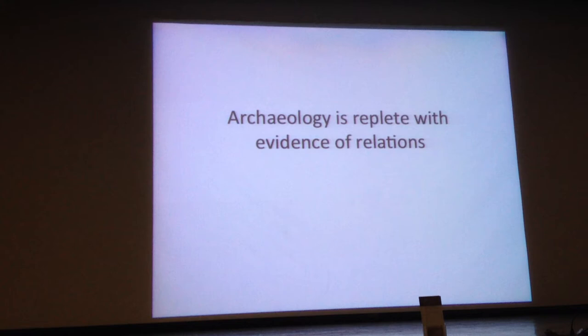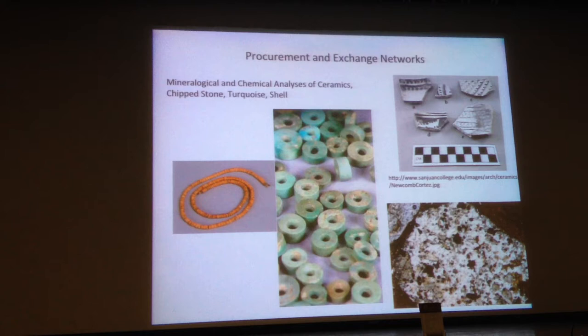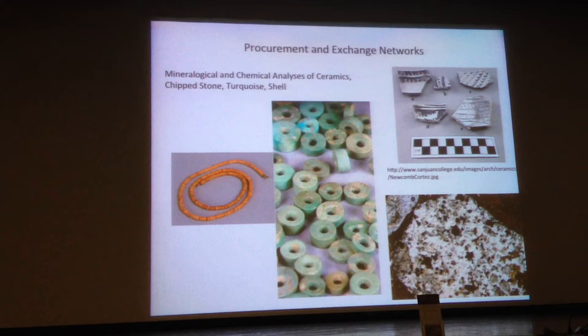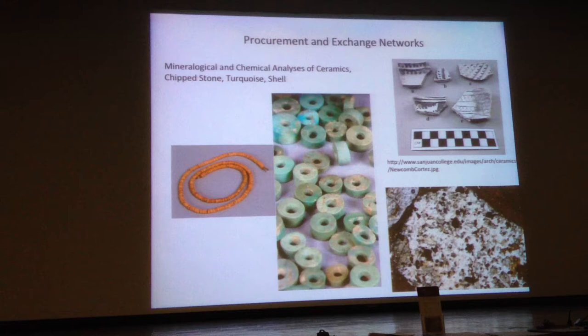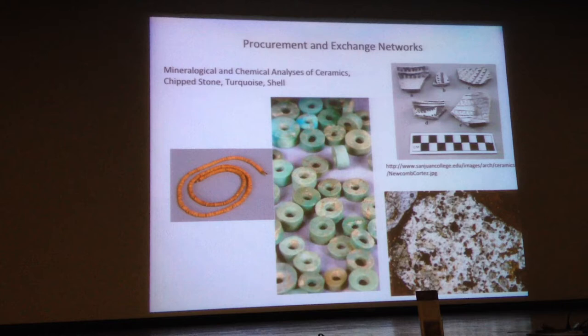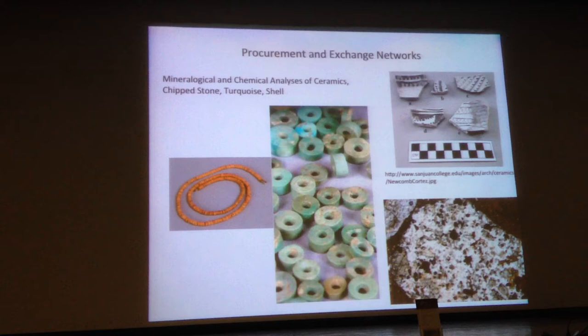Archaeology is replete with evidence of relations and networks. In the Southwest, using mineralogical and chemical analyses, archaeologists have been able to analyze procurement and exchange networks. One key attribute is the identification of production areas. The classic case was identified by Ann Shepard, based on the spatially restricted distribution of raw materials for ceramics, including the temper in the Chisca Mountains. She demonstrated that salt-tempered ceramics occurring over 70 kilometers away at Chaco were not made in Chaco but had to come from the Chiscas.